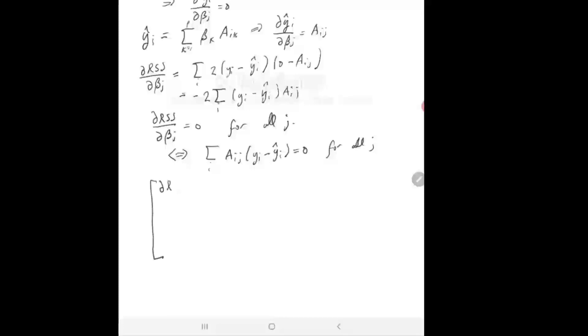It's kind of telling me that... let's just write it like this. It says here that if I look at A transpose of y vector minus y hat is equal to 0.